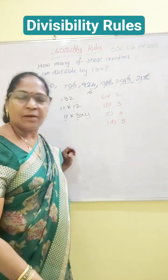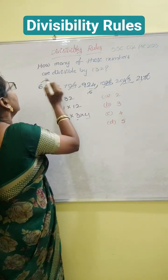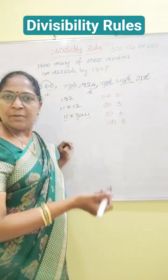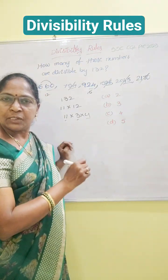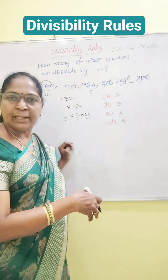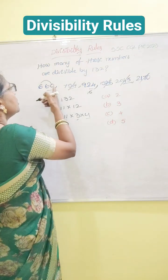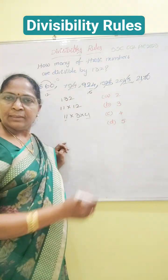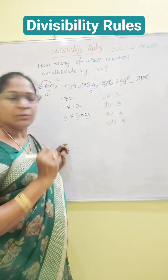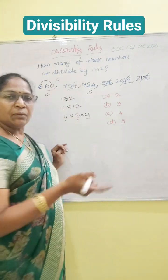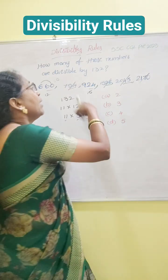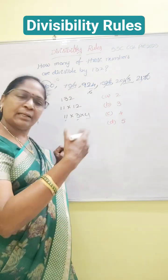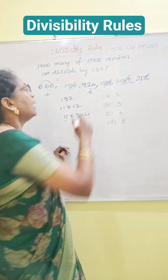Next you have to check 11. What is the divisibility rule of 11? Sum of the alternate digits — the difference between the sum of the alternate digits is equal to 0, or the number is divisible by 11. Whenever you are getting 0, yes, it is divisible by 11. Or if the difference equals any other multiple of 11, then also the number is divisible by 11.